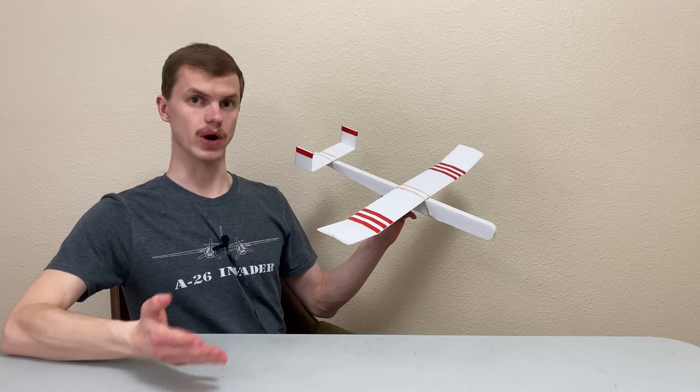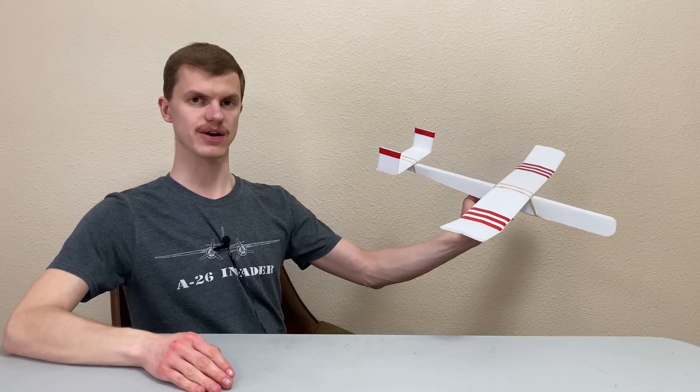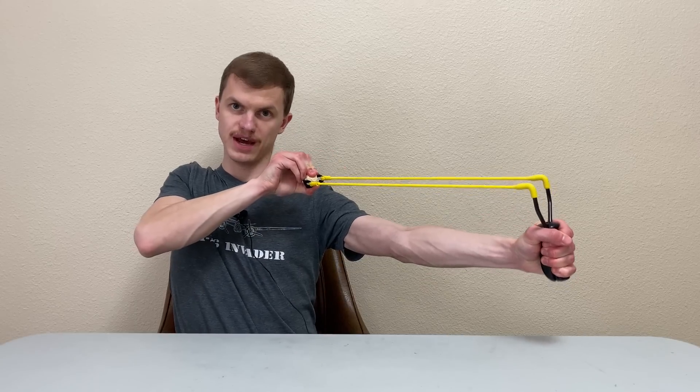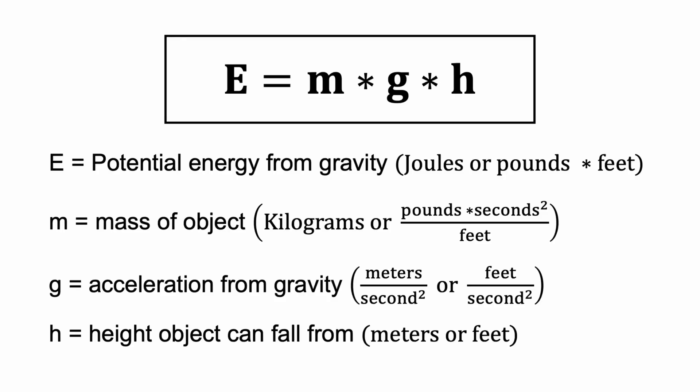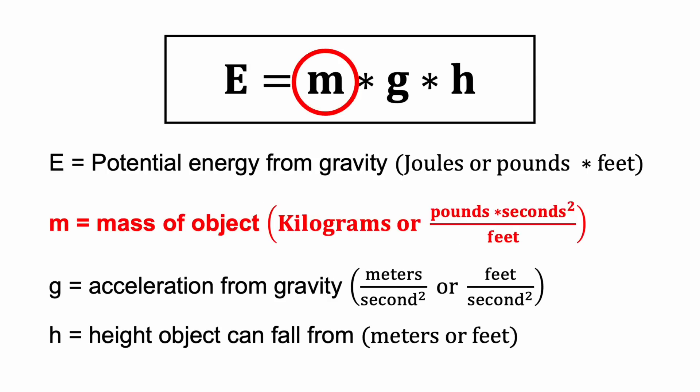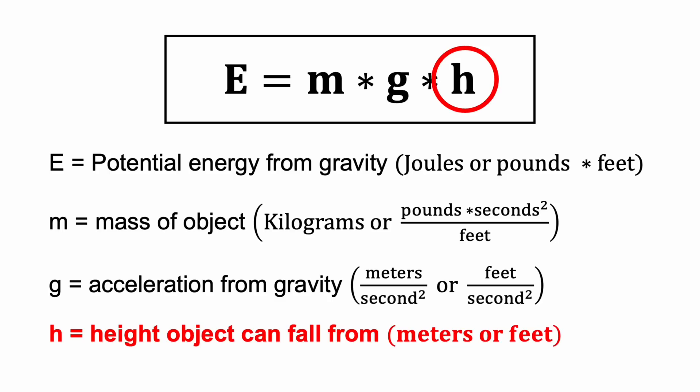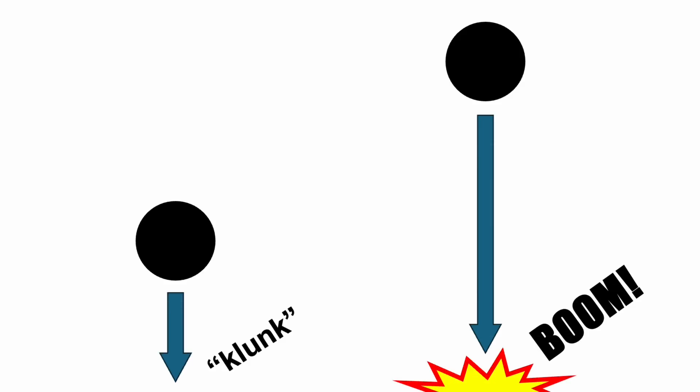Energy is the capacity to do work. In this case, the work we're doing is pushing our planes forwards through the air. Energy can come in many different forms, and there are two main types we're going to be dealing with in this video. The first is potential energy, which is energy that is stored in an object and has the potential to be released. We're going to be dealing with gravitational potential energy, which comes from gravity acting on an object that has the potential to fall. The gravitational potential energy stored in an object is calculated using the equation shown here. Larger, heavier objects have more potential energy, and objects that have the potential to fall from a greater height have more potential energy as well.